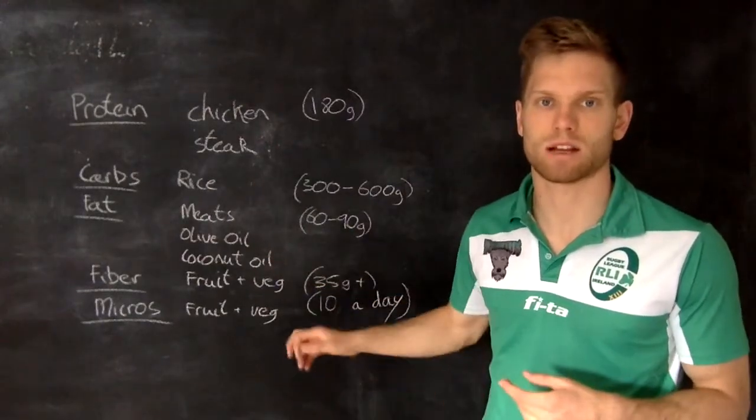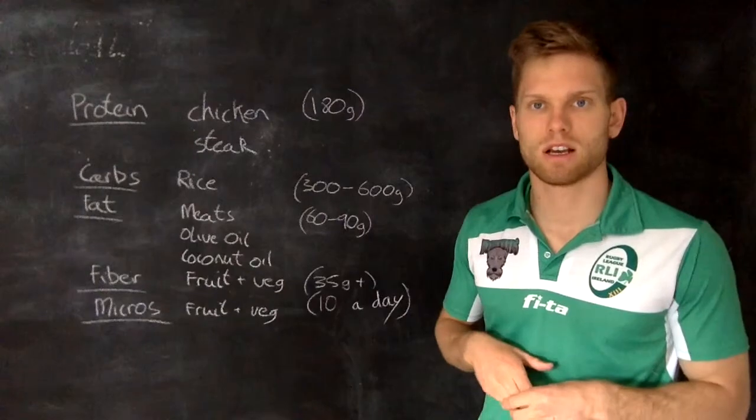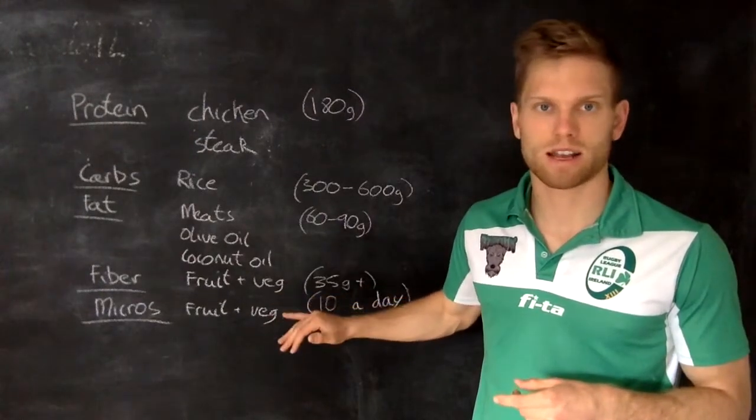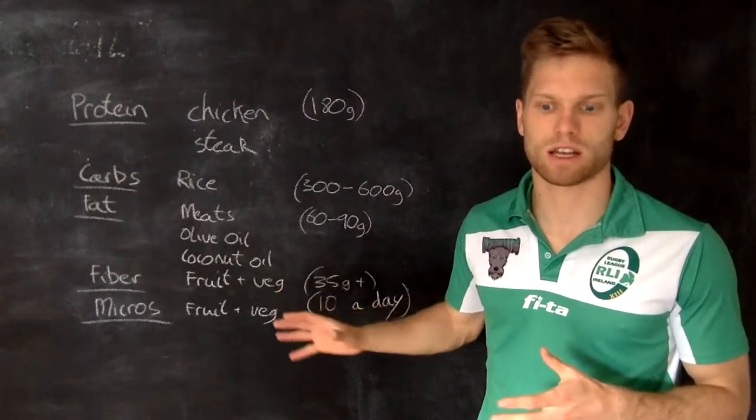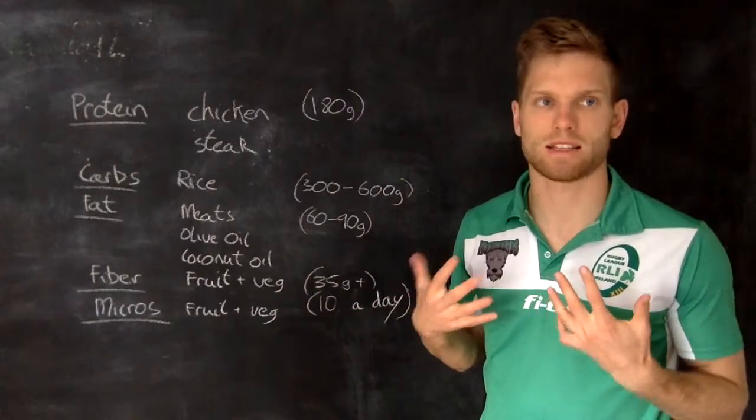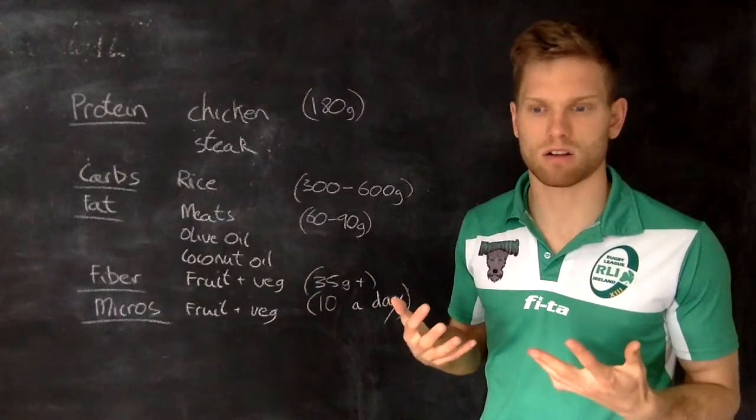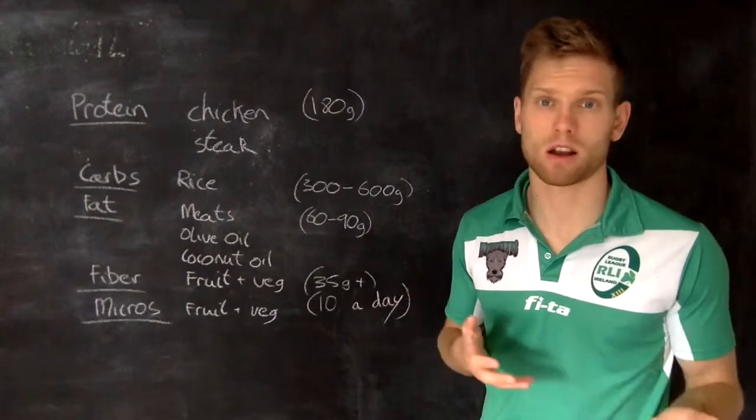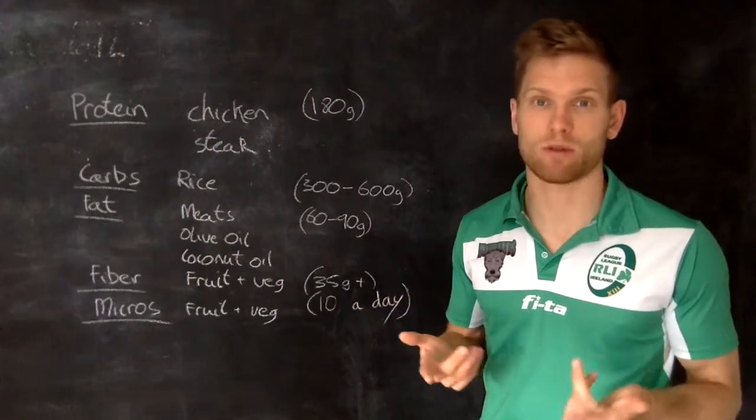The fiber then - so my fruit, my veg - again what I'll do is I'll buy a 750 gram bag of frozen vegetables, put them all on at one time, and actually have a bowl of them here. And I just eat that throughout the day.